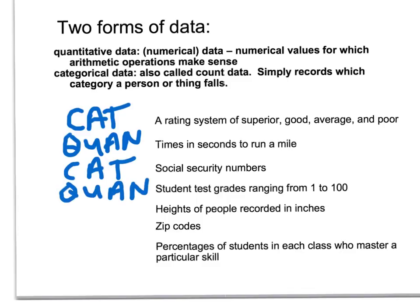Heights of people recorded in inches — again, numerical data, and it makes sense to take an average. It makes sense to have 0.5. So this would be quantitative.